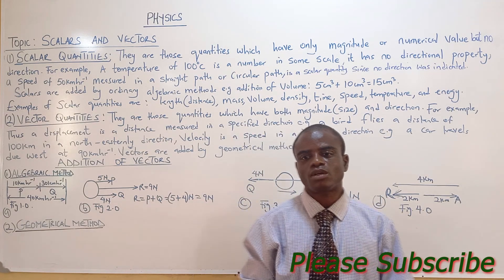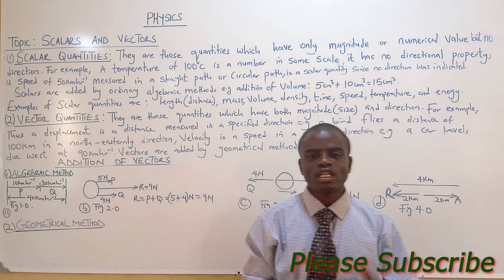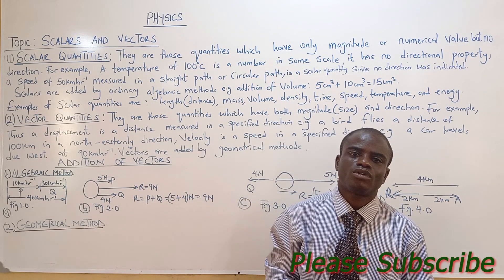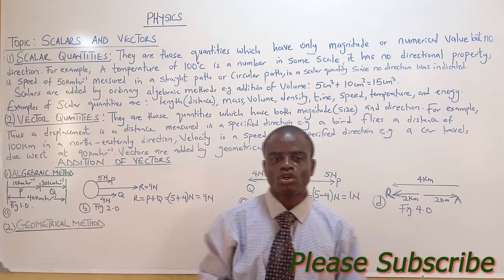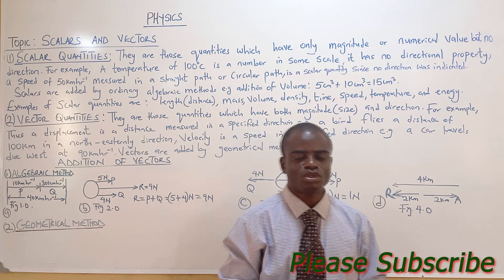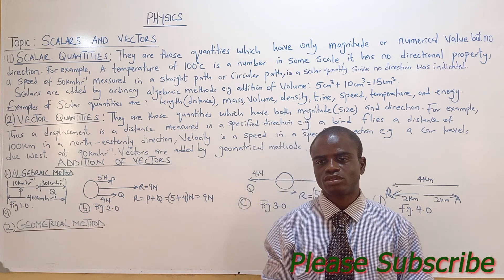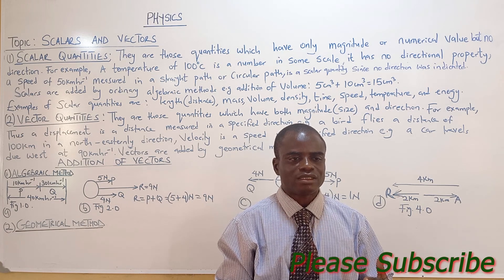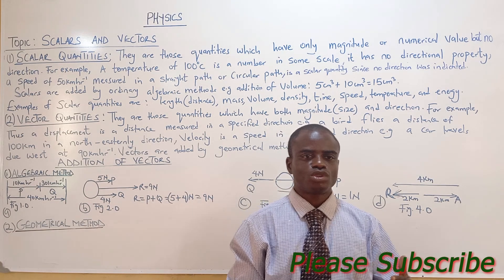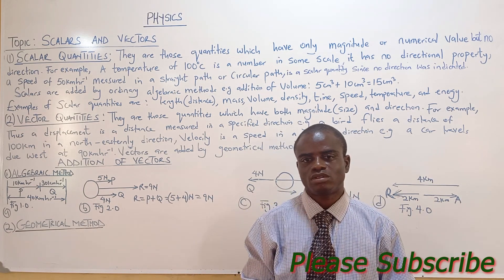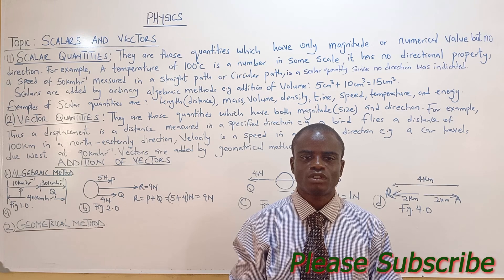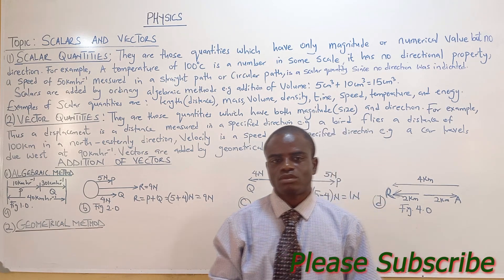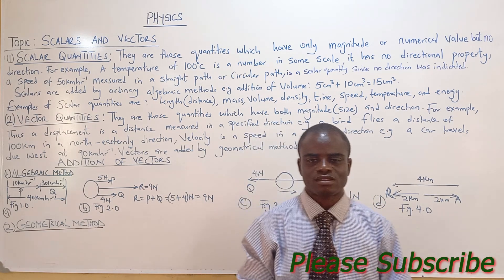Now let's define scalar quantities. Scalar quantities are those quantities that have only magnitude or numerical value but no direction. For example, a man moves 2 meters — that is a numerical value without telling the direction where he moves — we refer to that as distance.